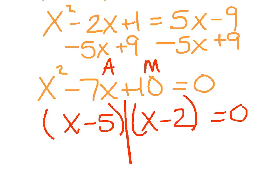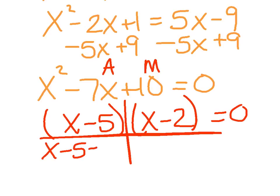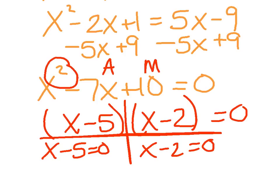When I set each factor equal to 0 and solve, I should get 2 answers because I had a quadratic: x equals 5 and x equals 2.